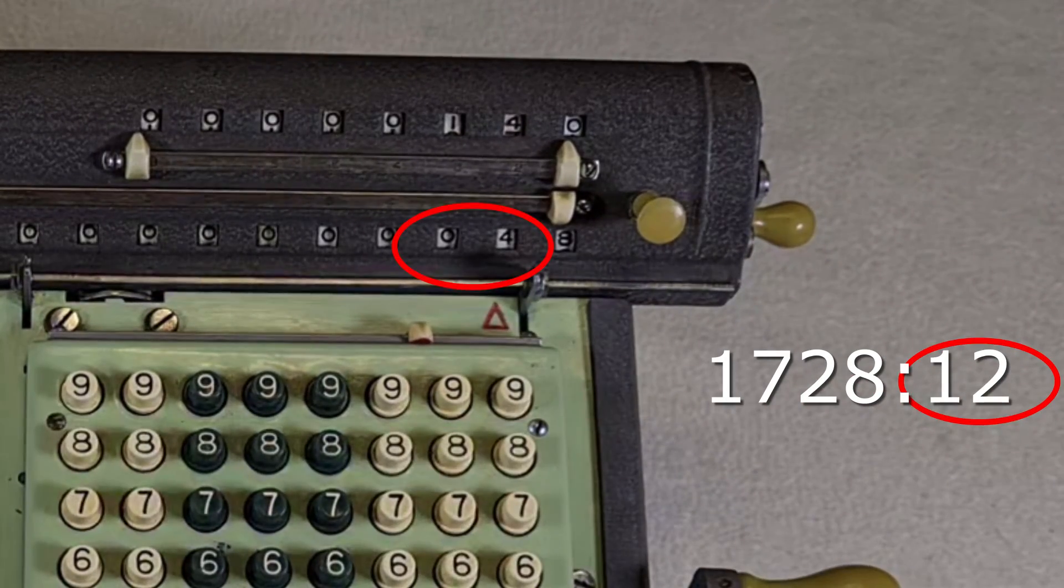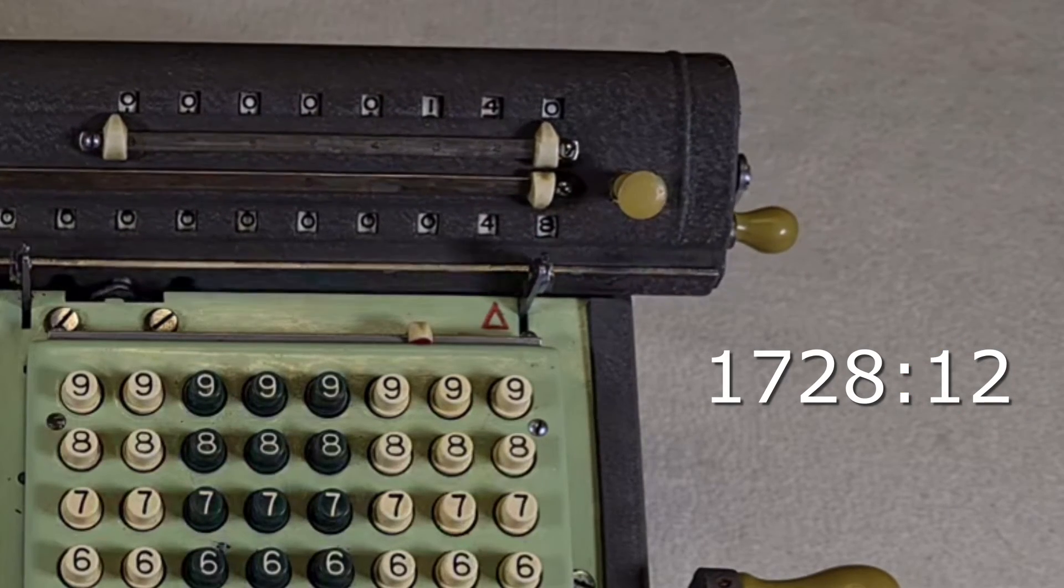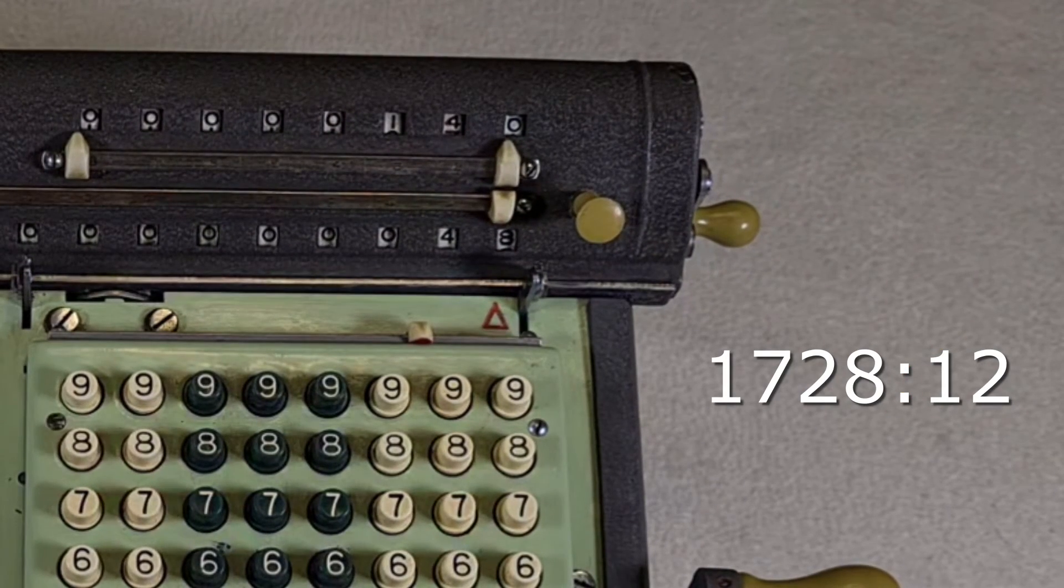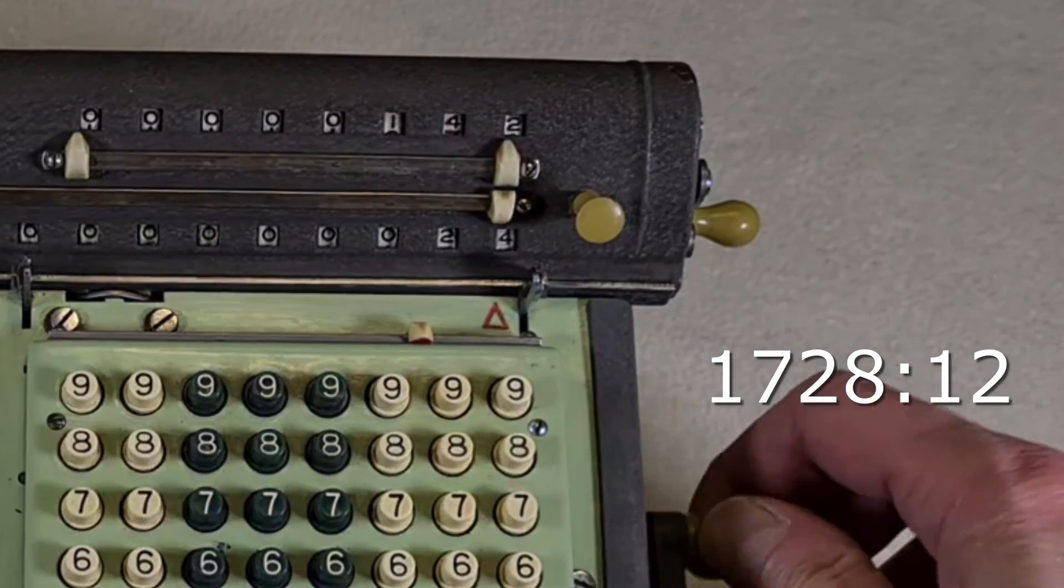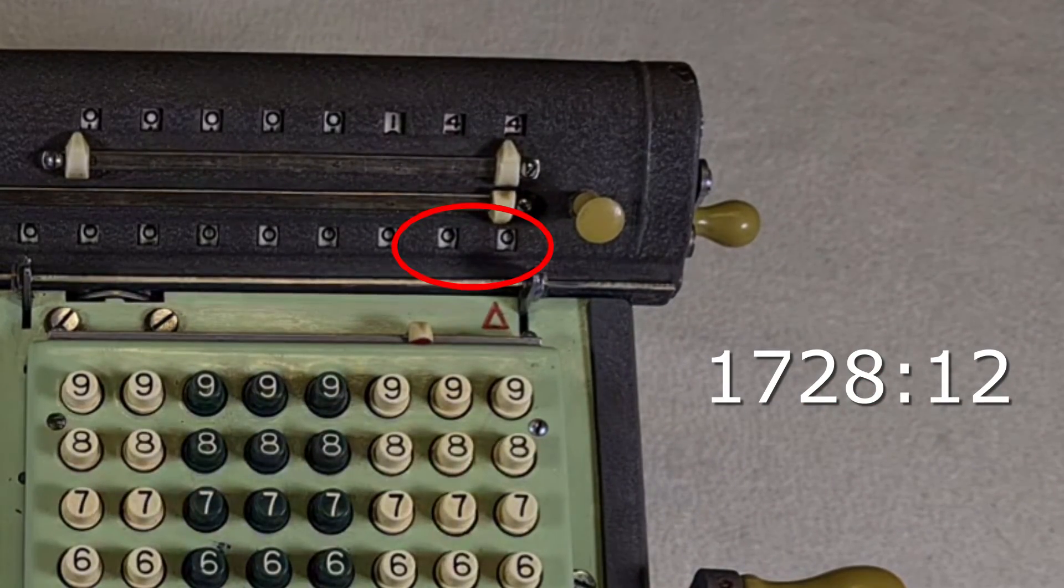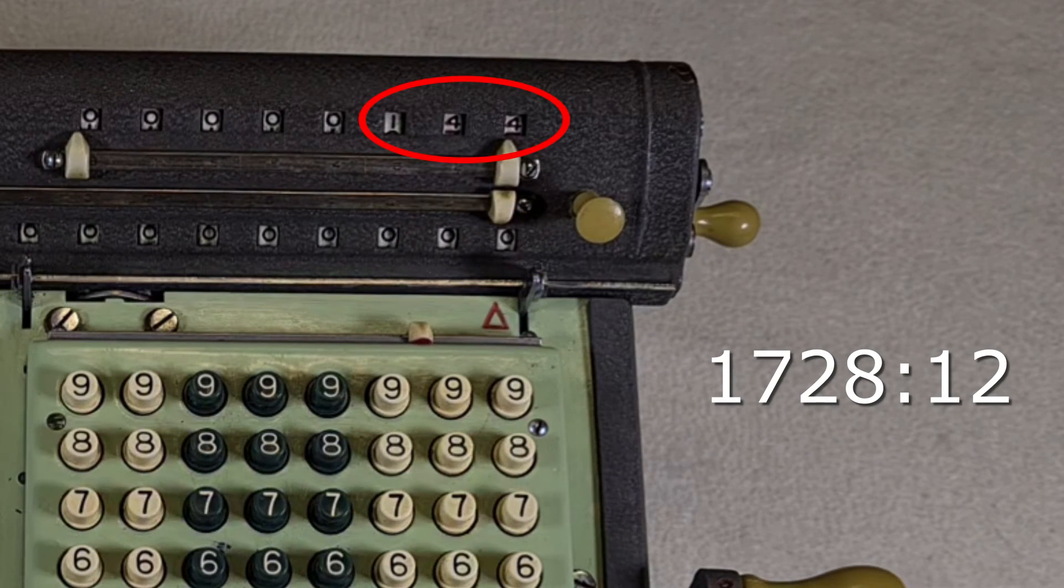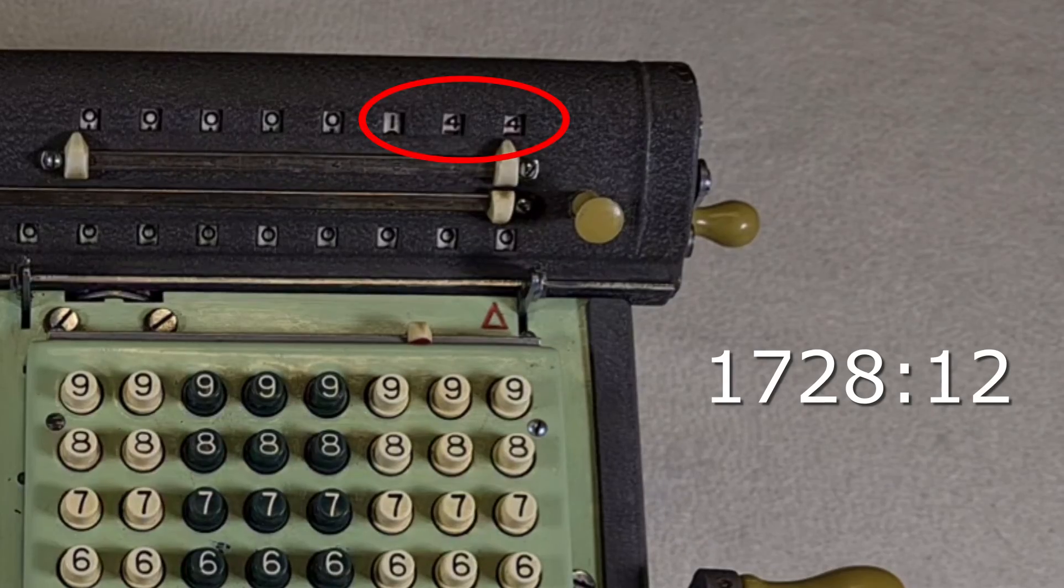Now there is 4 lower than 12 and I move the carriage again to the left and I turn the crank. Now there are all zeros and the calculation is finished. Here there is the result, 144.